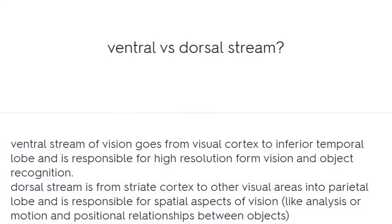Ventral versus dorsal stream: The ventral stream of vision goes from the visual cortex to the inferior temporal lobe and is responsible for high-resolution form vision and object recognition. The dorsal stream goes from the striate cortex to other visual areas into the parietal lobe and is responsible for spatial aspects of vision.